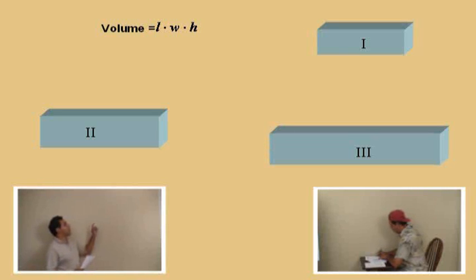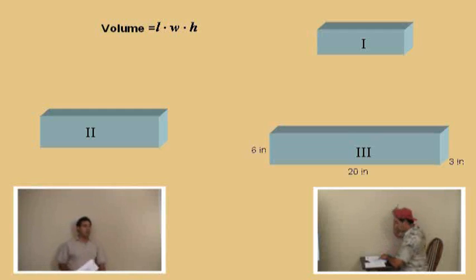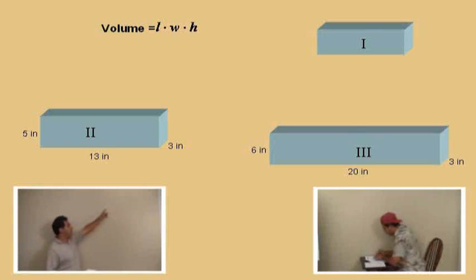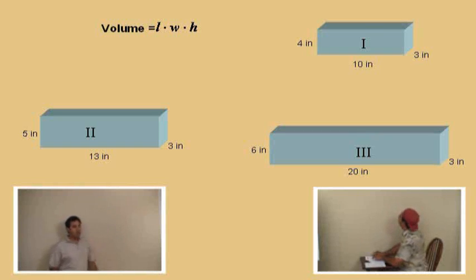What's the dimensions for rectangular solid number 3? Charlie, length, width, and height. What are they? 20, 3, and 6. Very good. You're paying attention to the workbook. Now let's go to number 2. 13, 3, and 5. Very good. Okay, and give us the dimensions for shape 1, rectangular solid 1. 10, 3, and 4. There you go, Charlie.